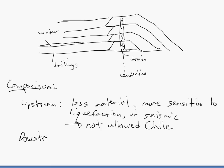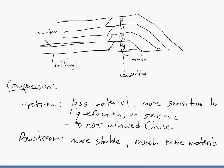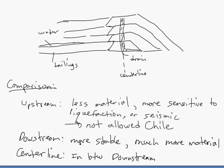Downstream is more stable, but it requires much more material, so you're going to have to compare with cost - it's going to be more expensive. Centerline is just like the name suggests - it's in between downstream and upstream. You use more material than upstream but less than downstream, and it's more stable than upstream but less stable than downstream.